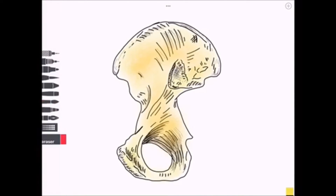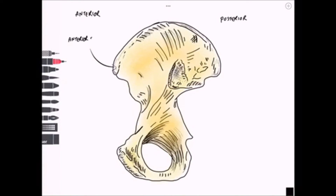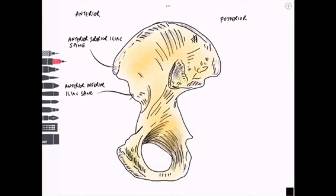We can see the anterior superior iliac spine and the pubic crest. We mentioned the inguinal ligament, but we also have attachment here of the sartorius muscle. This is also an important area and landmark for surface anatomy. The anterior inferior iliac spine is an attachment for the iliofemoral ligament.